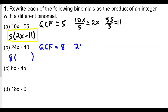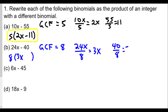We divide each term by the GCF: 24x divided by 8 is 3x, and 40 divided by 8 is 5, giving 8(3x − 5). If we distribute this we get 24x − 40, and there is no other common factor — so 3x − 5 is fully simplified.